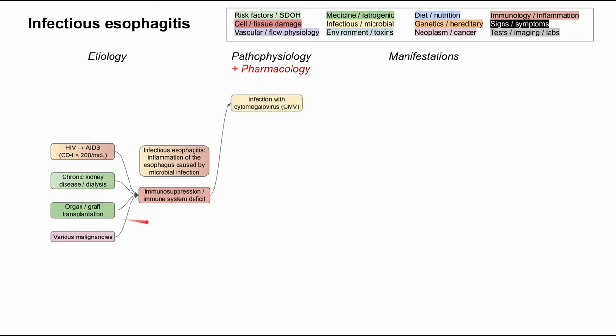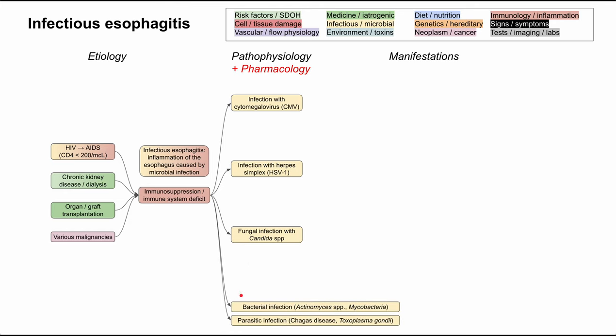Once you are immunosuppressed, you can be infected by a variety of microbes that can all affect the esophagus. Cytomegalovirus is one of the common ones. Herpes simplex, HSV-1 more commonly, is another common microbe infecting the esophagus. Fungal infections with Candida species are the last of the most common ones. You can also have bacterial infections with Actinomyces species and mycobacteria, and parasitic infections such as Chagas disease and Toxoplasma gondii, though those are less common.